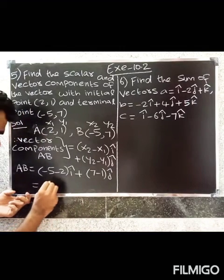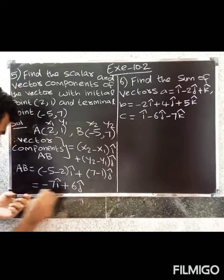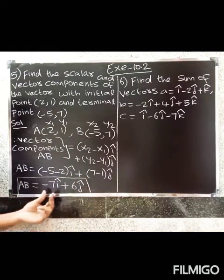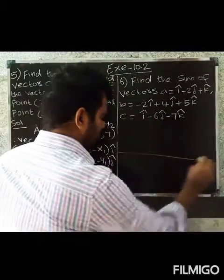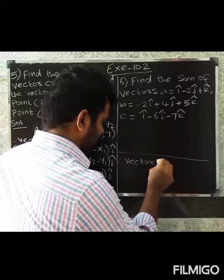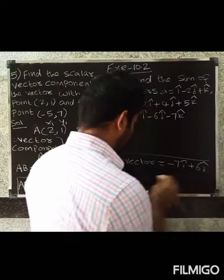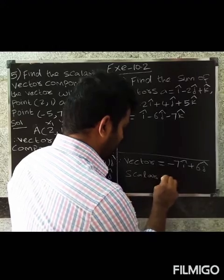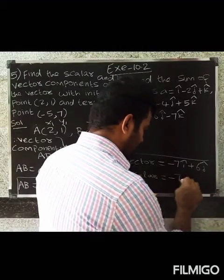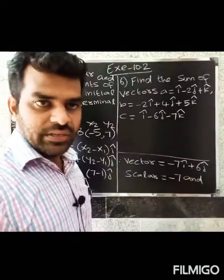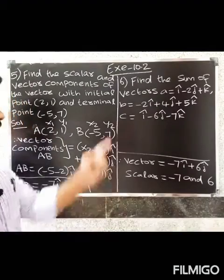So, (-5 minus 2) equals -7 î-cap, plus (7 minus 1) equals 6 ĵ-cap. Therefore, vector component AB equals -7 î-cap plus 6 ĵ-cap. The scalar components are -7 and 6. This is the total answer. Next is the sixth question.